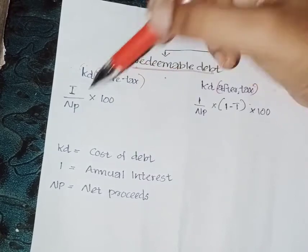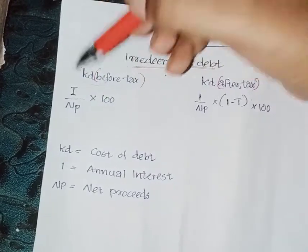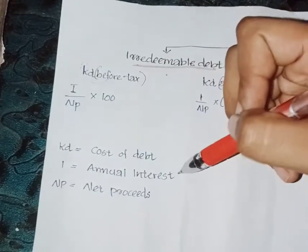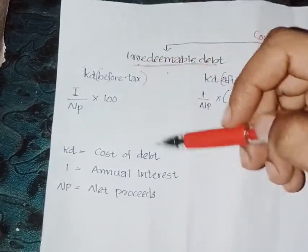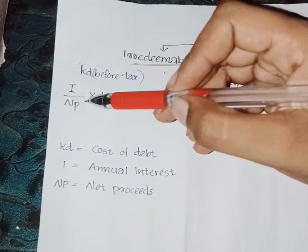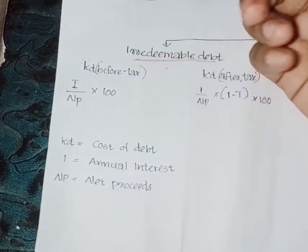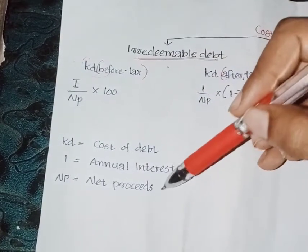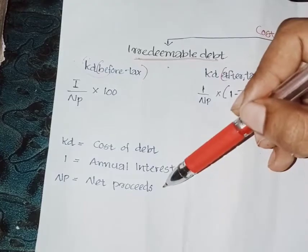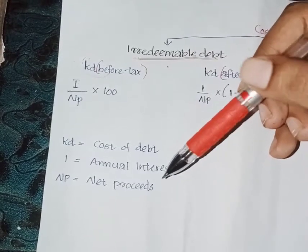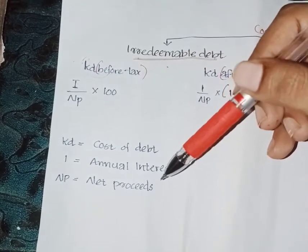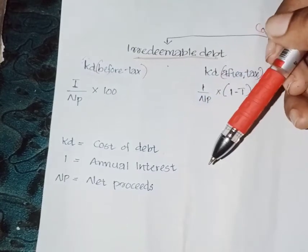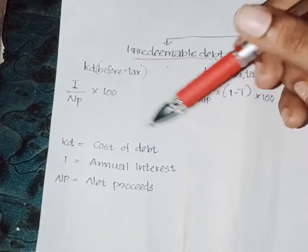The formula is I divided by NP into 100. I means interest. NP means net proceeds. The equation for net proceeds is: face value plus or minus premium or discount, minus flotation cost. If you have a premium, you add it to the face value. If you have a discount, you subtract it.